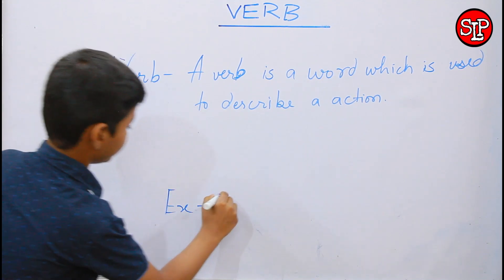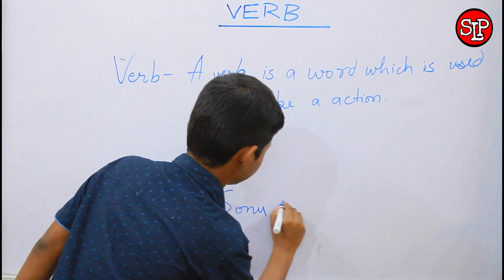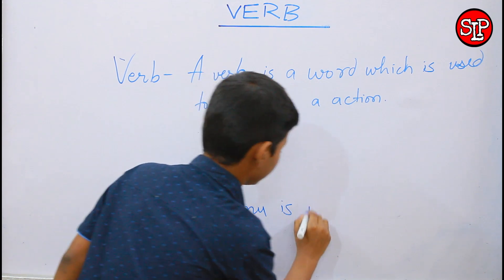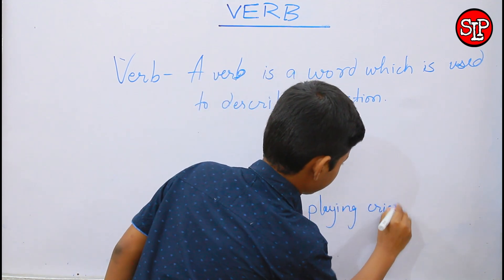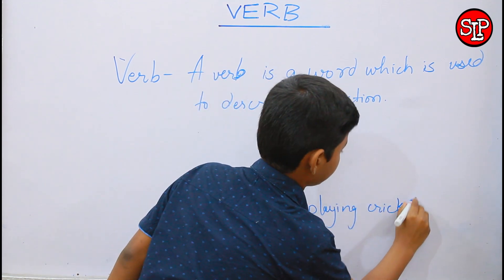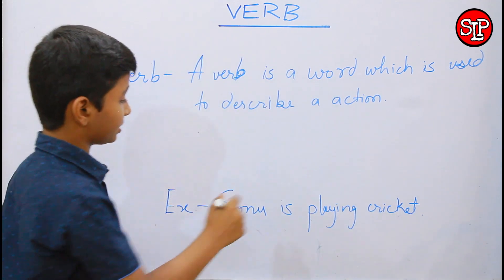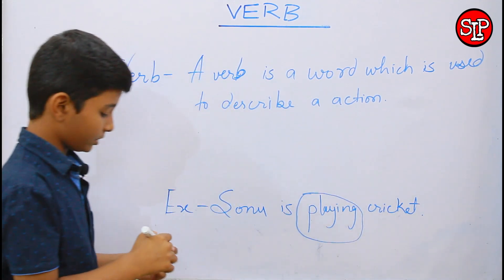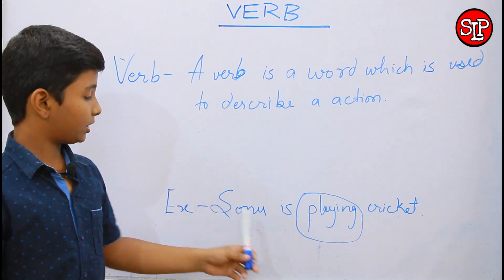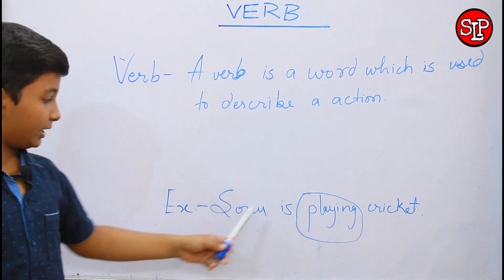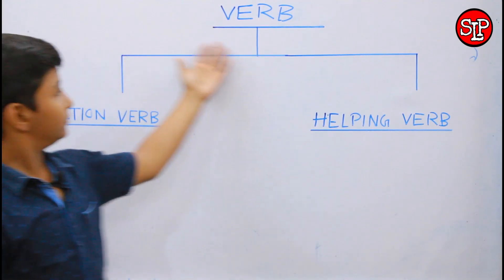For example: Sonu is playing cricket. So, in this sentence, playing is the verb, because it represents that Sonu is playing cricket.